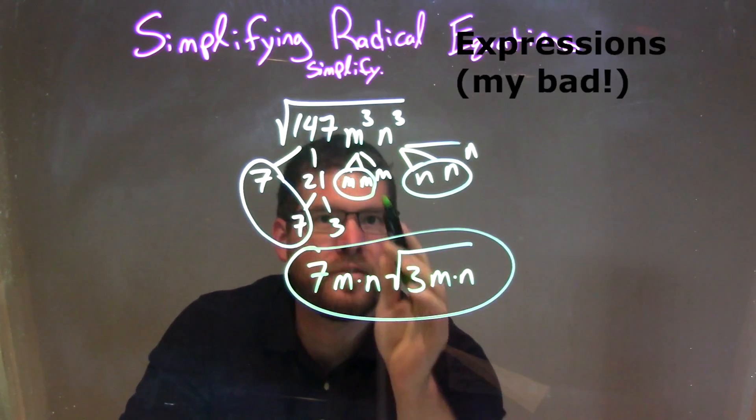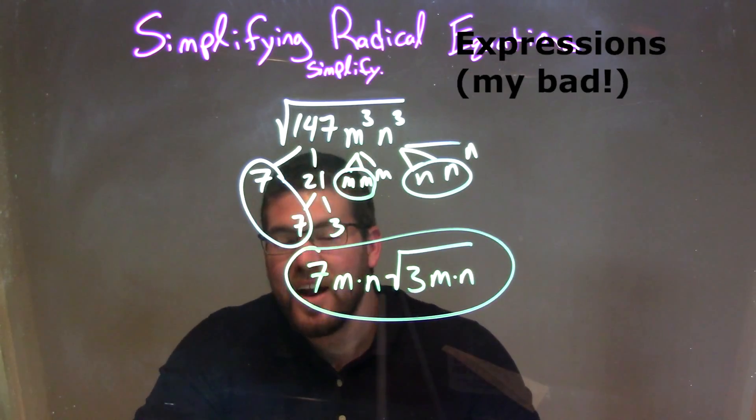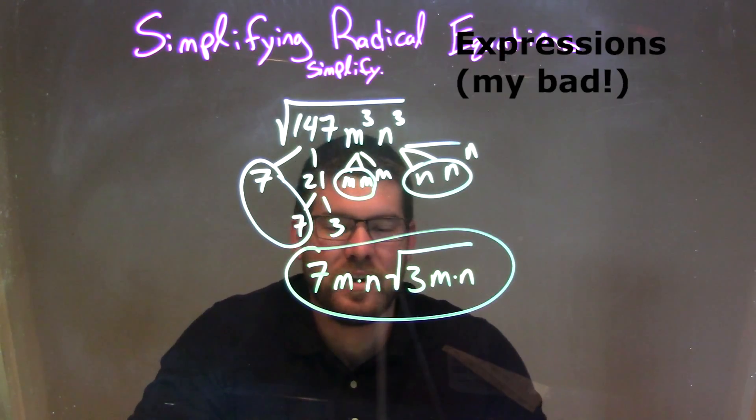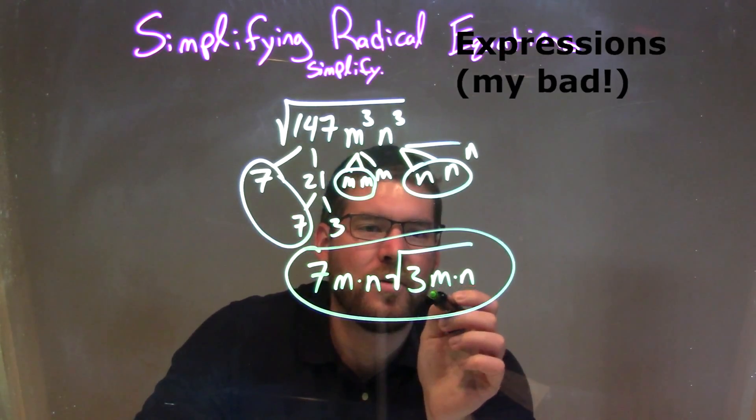And single m's on the inside, pair of ns on the outside, single n on the inside of the square root, and so my final answer here, didn't have to do much more simplification after that, which is 7mn times the square root of 3mn.